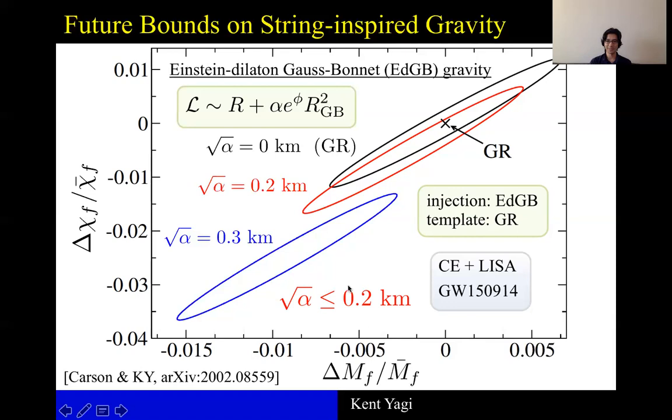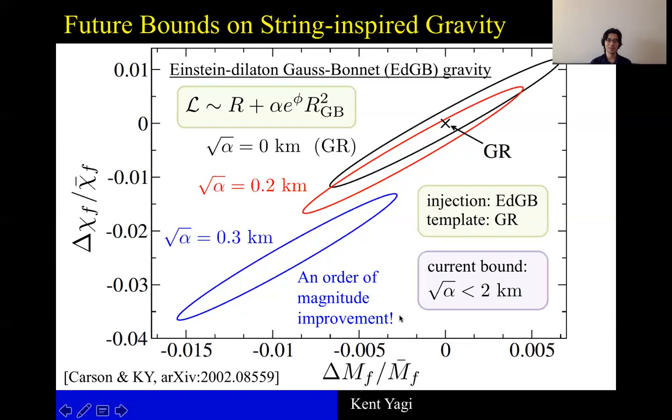Comparing this with the current bound of 2 kilometers, then you can see that there should be an order of magnitude improvement in terms of constraining this theory using this inspiral-merger-ringdown test.